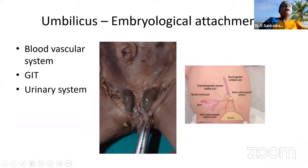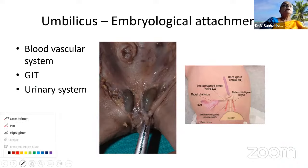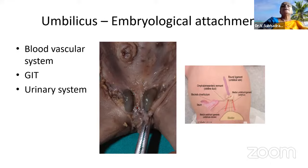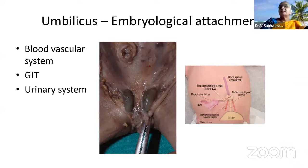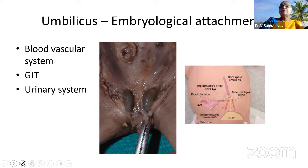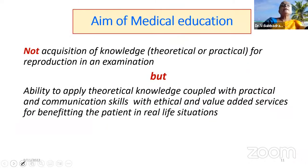After delivery, you observe the umbilicus and undescended testis. The umbilicus has many embryological attachments — the blood vascular system, gastrointestinal tract, and urinary system. Regarding undescended testis, in a newborn you wait up to one year for it to descend. If it does not descend, there are pathological effects and clinical conditions where surgery plays an important role.